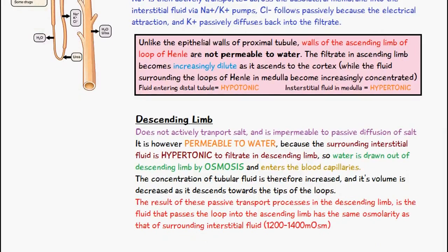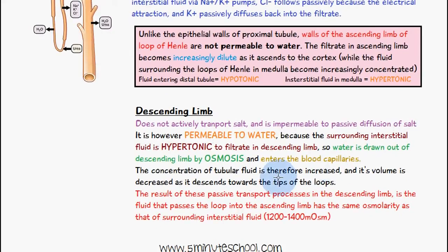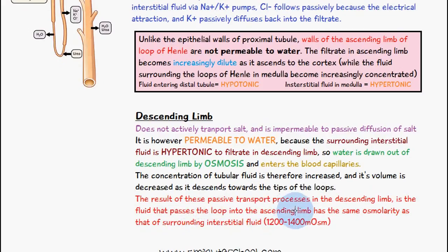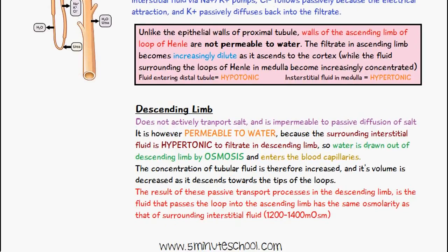The concentration of tubular fluid is therefore increased and its volume is decreased as it descends towards the tips of the loop. Since water is removed in the descending limb, the filtrate becomes more concentrated as it passes into the ascending limb, where salt is also removed, and then the fluid becomes more dilute again as it passes into the distal convoluted tubule. The result of these passive transport processes in the descending limb is that the fluid passing into the ascending limb has the same osmolarity as that of the surrounding interstitial fluid, which is 1200 to 1400 milliosmoles.